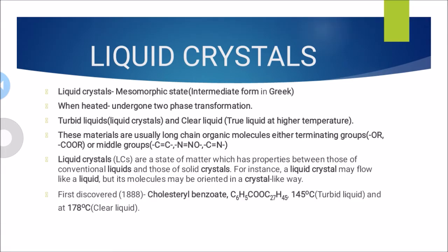These liquid crystal materials are usually long chain organic materials, with terminal groups such as OR and COOR. In between, they will have C double bond C, N double bond N, and NO, C double bond N like groups. This is one type of indication that a particular material may possess liquid crystal nature.